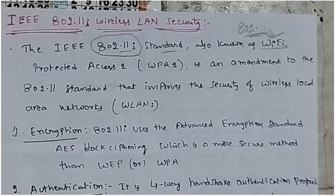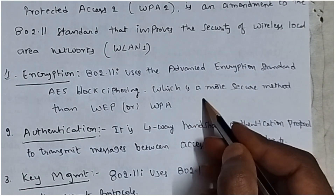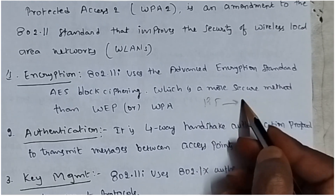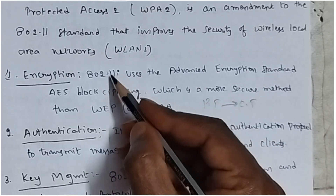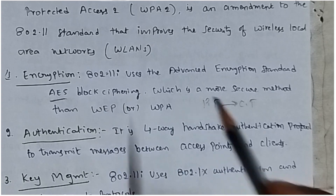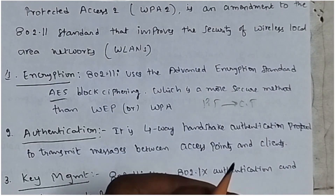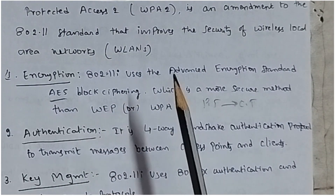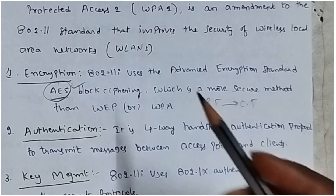802.11i provides security through some features. The first one is encryption. Encryption means plain text is converted into cipher text. 802.11i uses the Advanced Encryption Standard, AES, algorithm for block ciphering, which is a more secure method than WPA. It uses the AES block cipher algorithm to provide security.